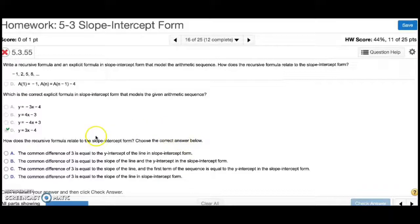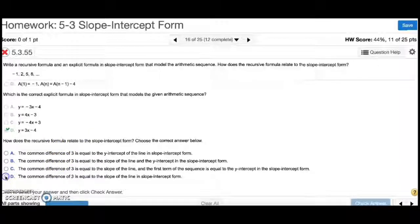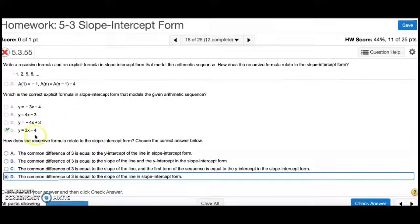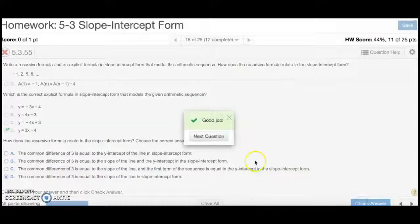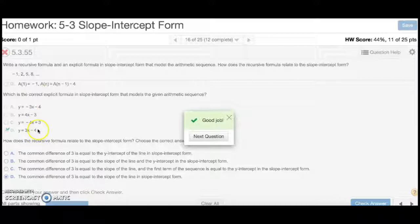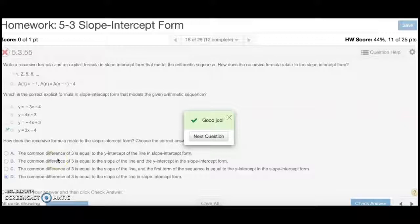Now, how does it relate? The common difference of 3 is going to be the slope of the line. So, that means it's going to be D, because it is the slope of the line in slope-intercept form, but nothing else. Y-intercept is not the first term. The y-intercept is negative 4. The first term is negative 1, so it can't be any of the other choices that involve it being the slope of the line. So, that's number 16.